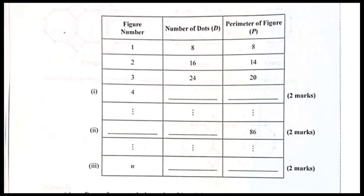Look for what is added — if there's a common thing being added or subtracted, that's what you look for. In this one, you're looking at 8, 16, 24 — I can see they're adding 8 each time right here, so this is 32 based on what I'm seeing going down.